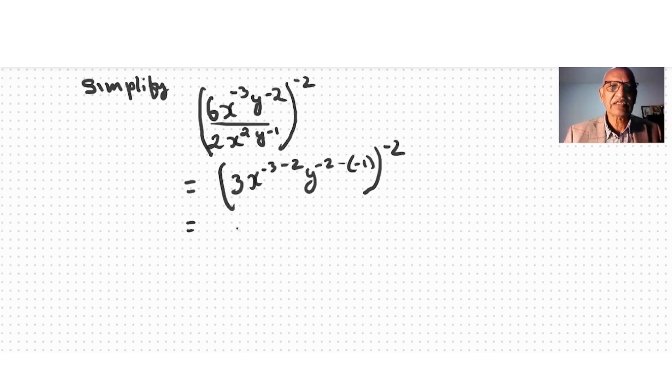we simplify this: 3x to the power of minus 5, y to the power of negative 2 plus 1 is negative 1, to the power of minus 2. Now this exponent is for all of them, therefore I say 3 to the power of negative 2